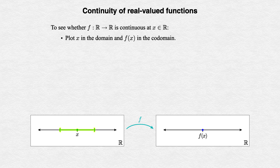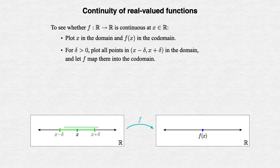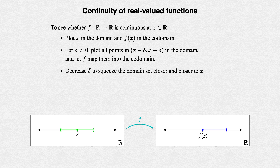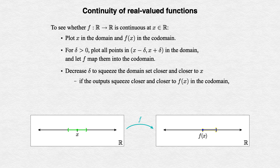Now we plot all of the real numbers near our point x in the domain, say from x minus delta to x plus delta for some positive distance delta, and we let f map them all into the codomain, obtaining a set of outputs. We now look at what happens to this set of outputs as we decrease delta, squeezing toward x in the domain by tossing out more and more of the points not as close to x. If the resulting output sets in the codomain squeeze closer and closer to the point f(x), then f is continuous at x.